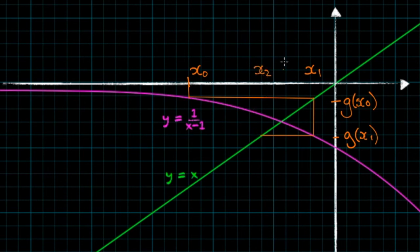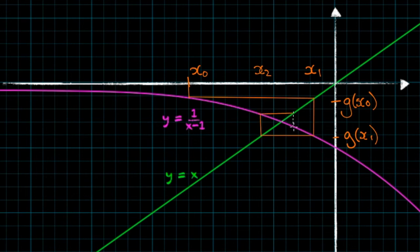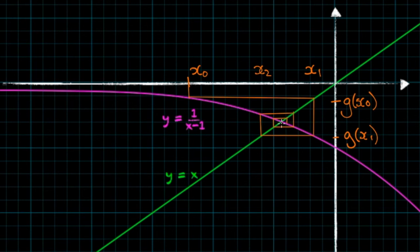Notice something quite interesting: for each new value of x, we're oscillating left and right of the root. If we kept going — drawing vertical lines to the curve, then horizontal lines to the straight line — we can see we're approaching the root. As our value of x oscillates left and right, we're actually getting closer and closer with each iteration. This iteration is going to converge to the root, and we've proved it using this cobweb diagram.